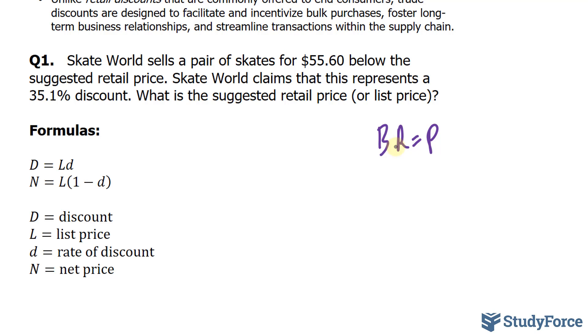But when learning about financial math, usually this formula is replaced with the one that we see here. Where rather than portion, we actually define it as capital D, which represents the discount. The rate is replaced with small letter d, which represents the rate of discount. And the base is replaced with L, which is the list price.